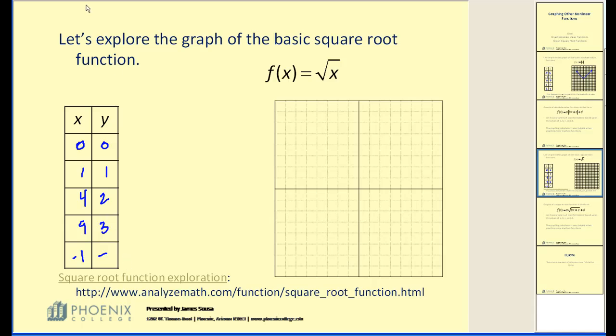Let's go ahead and plot the points that we do have: zero, zero; one, one; four, two. And unfortunately, nine, three is off the screen. But we can tell from the three points that we have that the graph of the square root of x looks like this.